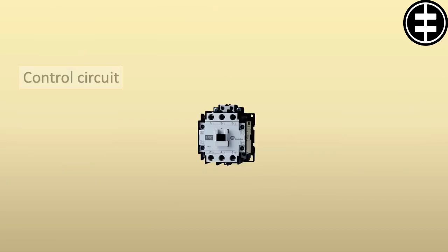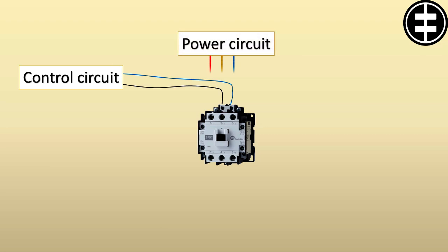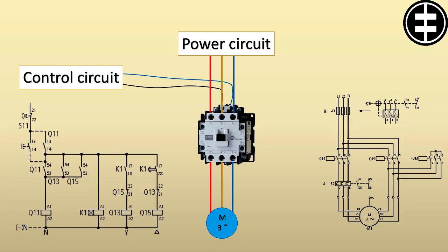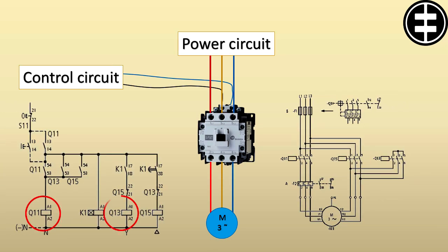It can be considered as the intersection point between control and power circuit, because it's controlled by the control circuit, and it's controlling the connection between power and loads. So you can find the contactor symbol in both control and power drawings.